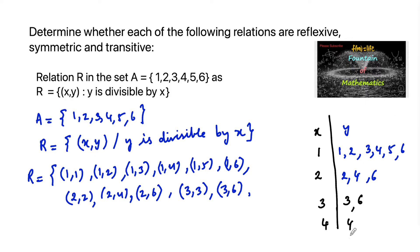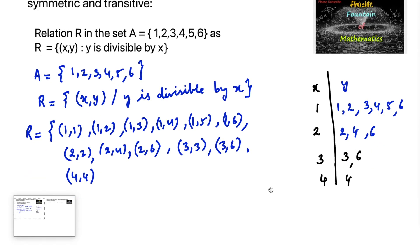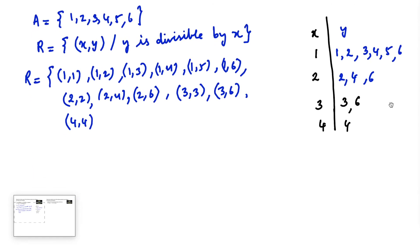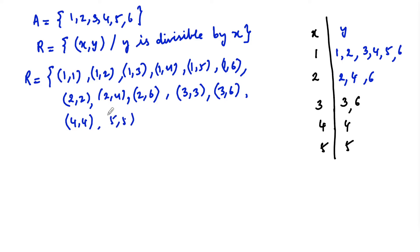For x = 4: only 4 is divisible by 4, so we get only (4,4). For x = 5: only 5 is divisible by 5, so only (5,5). For x = 6: 6 is divisible by 6, so only one ordered pair (6,6).